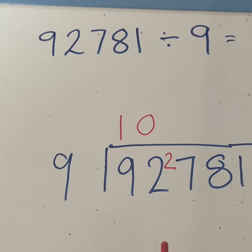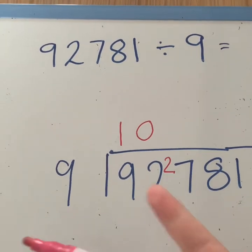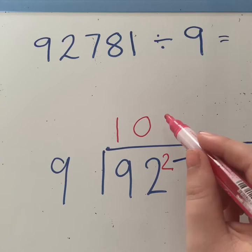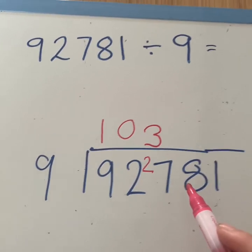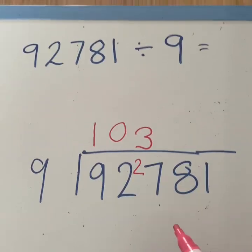But I have to remember to carry that 2 over to our next numbers. Now I've got 27. If we count up in our 9 times tables, 9, 18, 27. That's 3. Exactly. So I've got nothing to carry over.